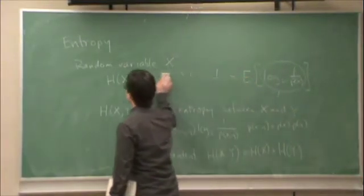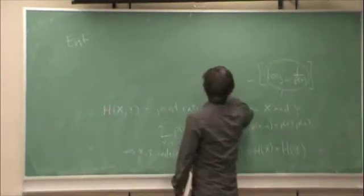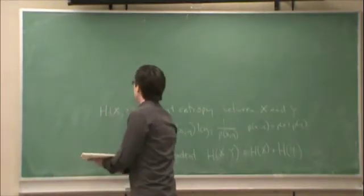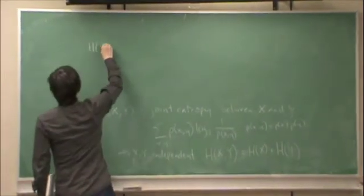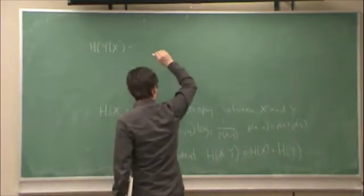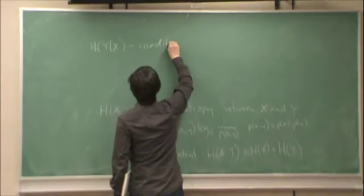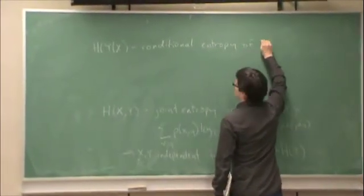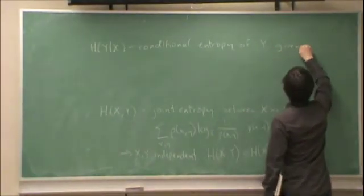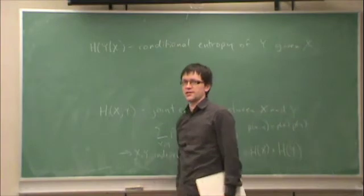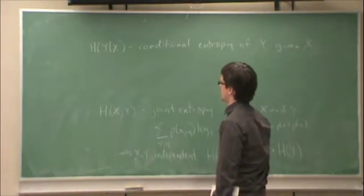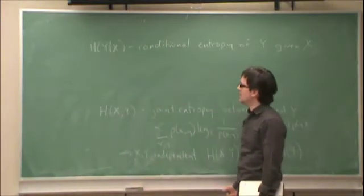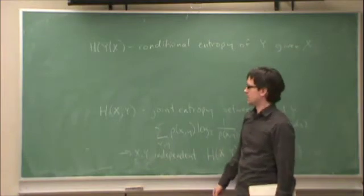We also saw conditional entropy, which was H of Y given X. This is the conditional entropy of Y given X. In other words, if I tell you what x is, that may or may not give you some information about what y is. And it will certainly change your knowledge of the probabilities of y. So given each x, you can design an optimal code for each y.